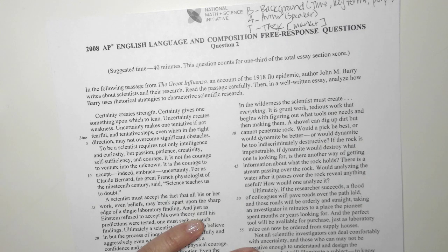In the following passage from the Great Influenza, an account of the 1918 flu epidemic, author John M. Berry writes about scientists and their research. Read the passage carefully. Then, in a well-written essay, analyze how Berry uses rhetorical strategies to characterize scientific research.